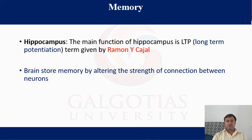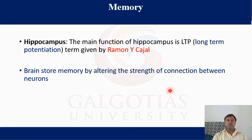The hippocampus is the major area, and its main function is long-term potentiation, as described by Raymond Cahal. The brain stores memory by altering the strength of connections between neurons.